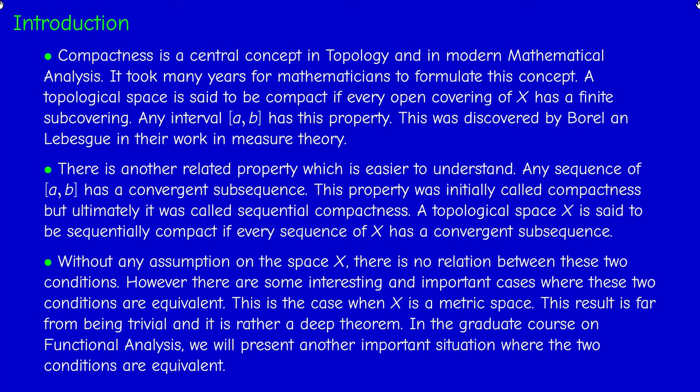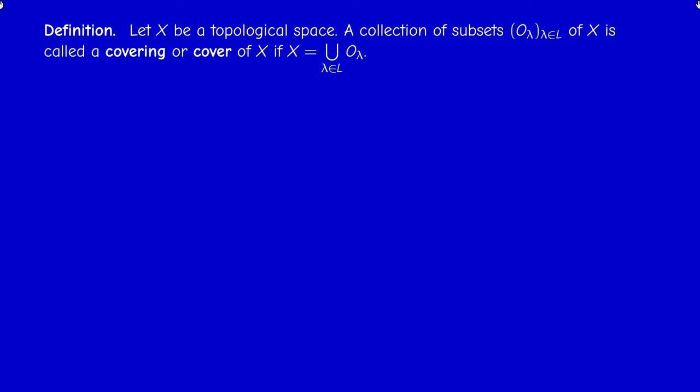Let us move slowly with definitions and examples since this is a hard topic. First, let us define the notion of covering or cover — you will find both words in books. If you have a topological space, or generally just a set, a covering of the space is a collection of subsets whose union is the whole space.